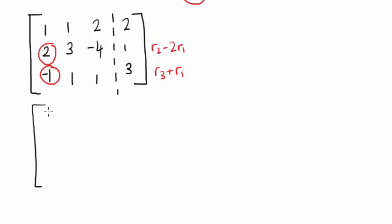The first row isn't going to be changed. For the second row, we get 0 here. We get 3 minus 2 times 1 here, which gives us 1. Minus 4 minus 2 times 2, that's minus 8. And 1 minus 2 times 2, that's minus 3.